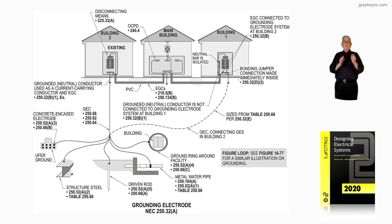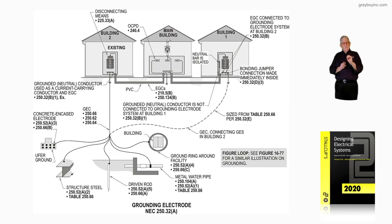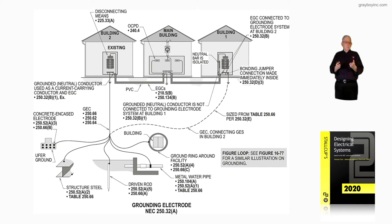In most all cases, you'll have a concrete encased electrode and the building steel in many cases. They've got to be bonded in as a common grounding electrode system in accordance with 250.50. Then you've got to qualify them as an electrode — is the steel considered an electrode with 10 feet or more of it in the earth, or is it bonded in to the concrete encased electrodes as shown?